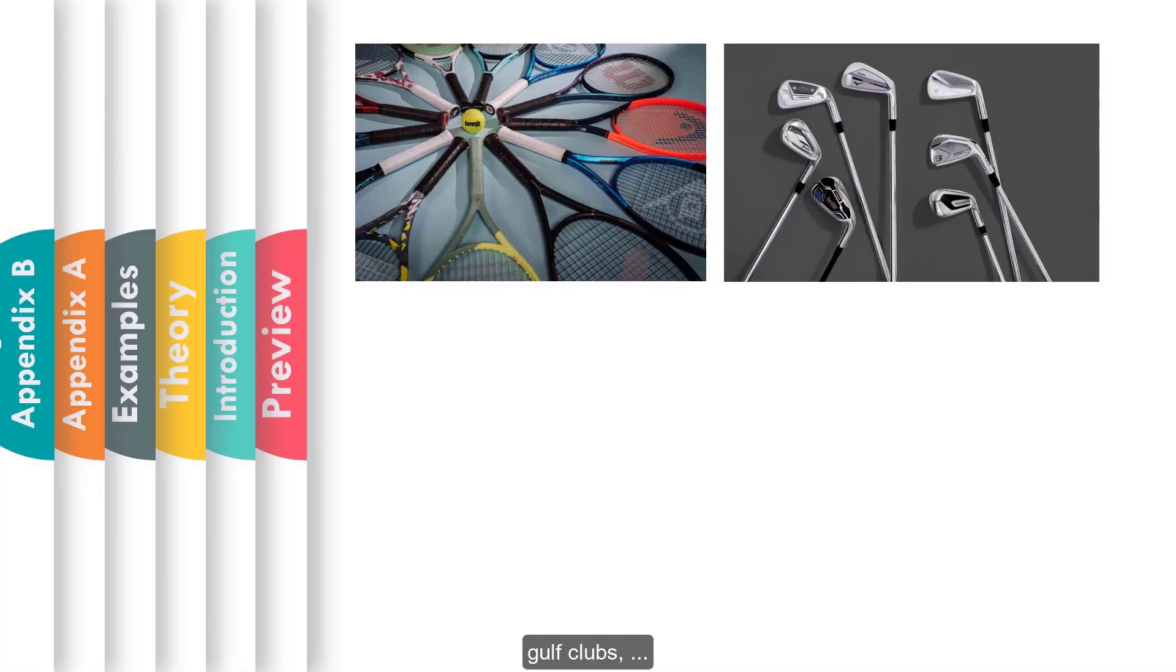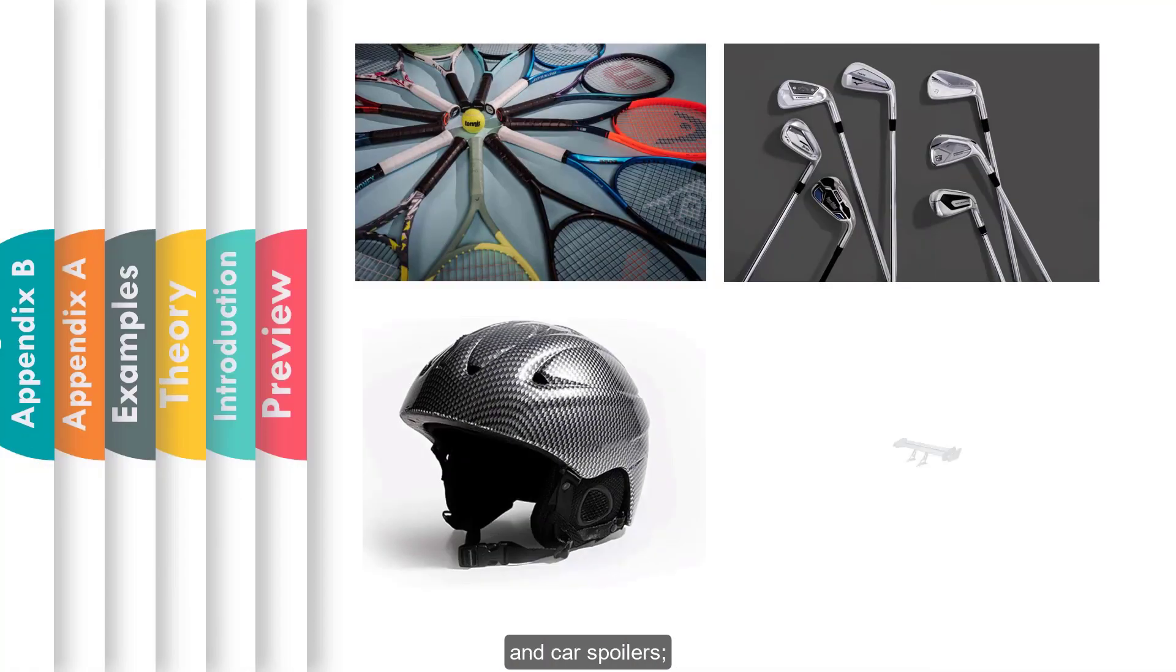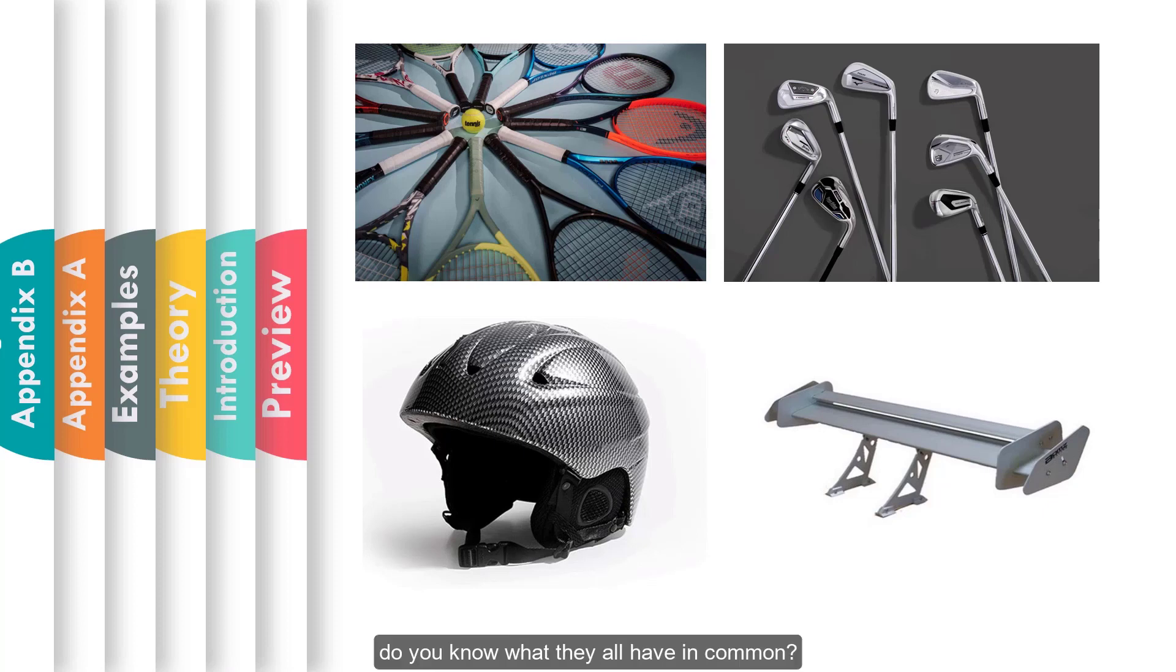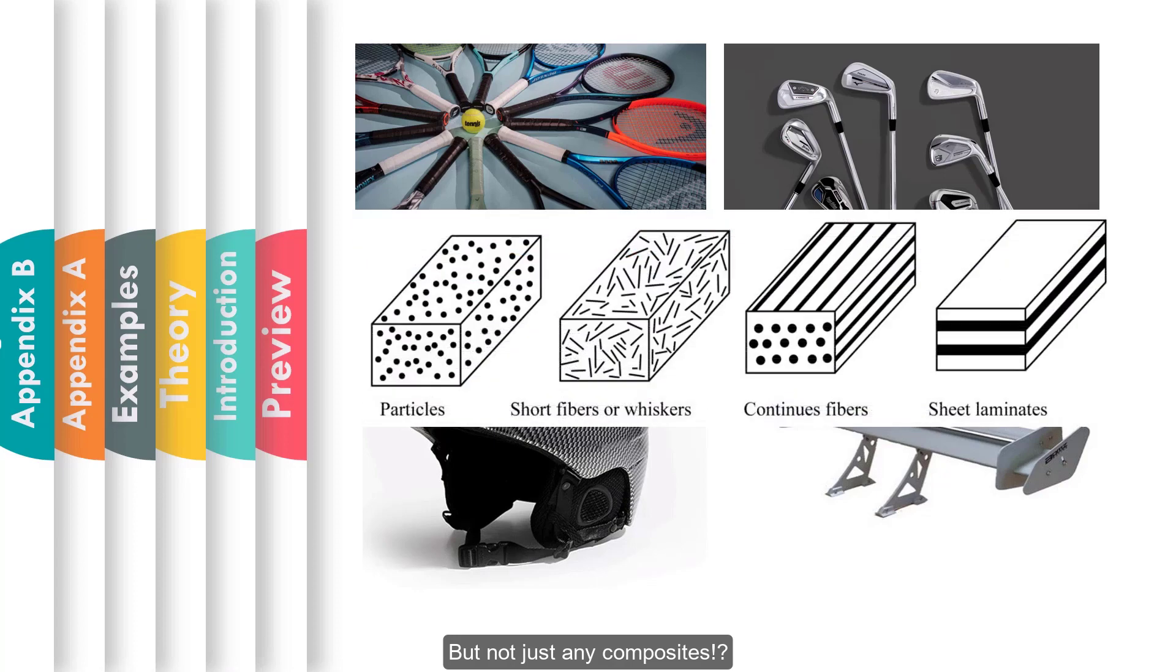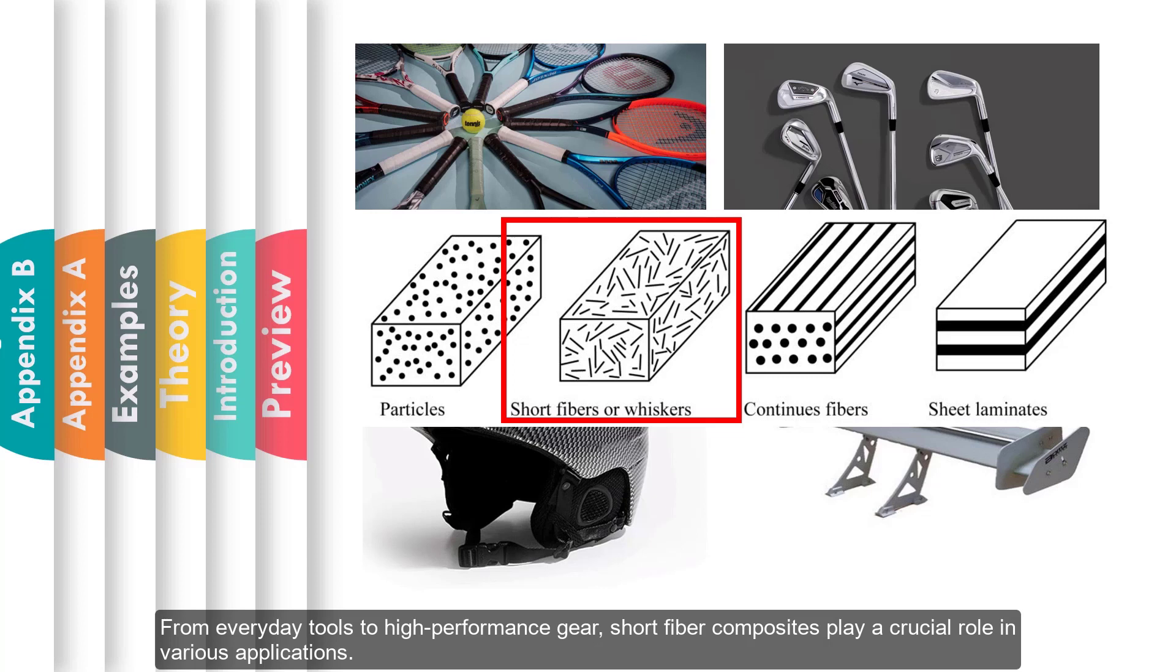Tennis rackets, golf clubs, armor helmets, and car spoilers. Do you know what they all have in common? They're all made of composites, but not just any composites—short fiber composites. From everyday tools to high-performance gear, short fiber composites play a crucial role in various applications.